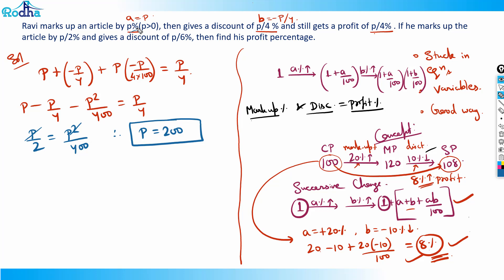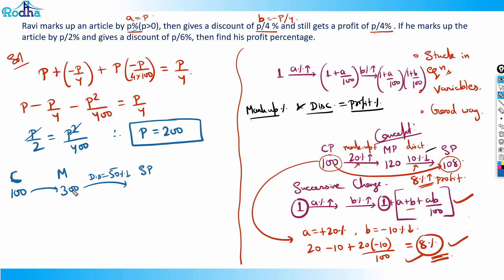Let's verify: assume CP = 100. Markup of P = 200 percent gives marked price = 300. Discount of P/4 = 50 percent on 300 gives selling price = 150. Profit = 50 percent. And P/4 = 200/4 = 50 percent. Verified correctly.